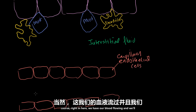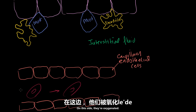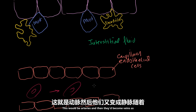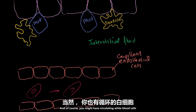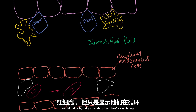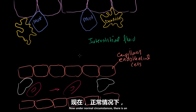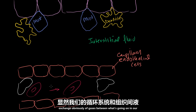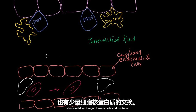Right in here, this is what we have — our blood flowing. We'll have red blood cells in here, maybe flowing in that direction. On this side they're oxygenated — this would be arteries — and then they'd become veins as the red blood cells lose their oxygen. You might also have circulating white blood cells, in a much lower quantity than red blood cells. Under normal circumstances, there is an exchange of gases and a mild exchange of some cells and proteins between the circulatory system and the interstitial fluid. But what we're going to see now is what happens when we have an intruder.